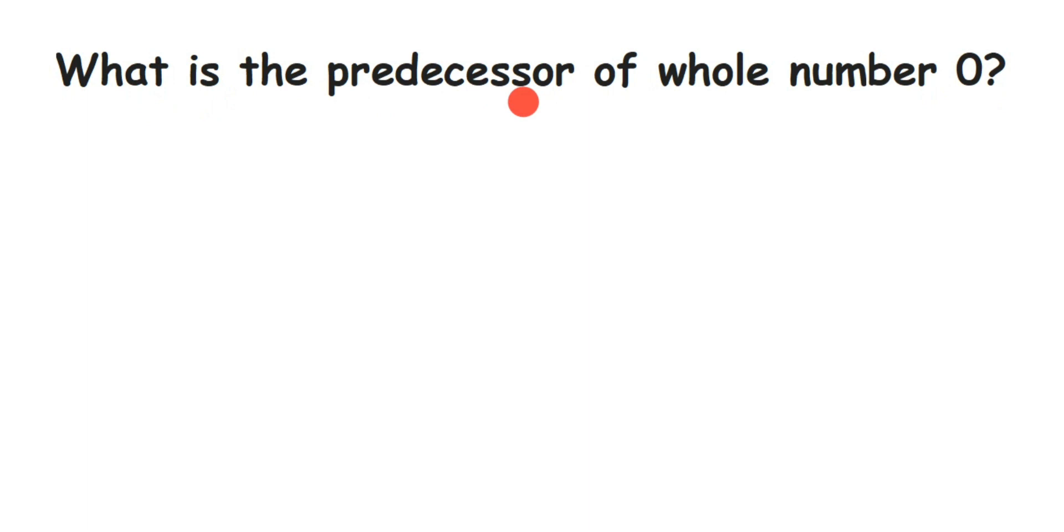We know that whole numbers start from zero, right? Whole numbers start from zero, then we have one, then two, and so on. Now we are asking what is the predecessor.